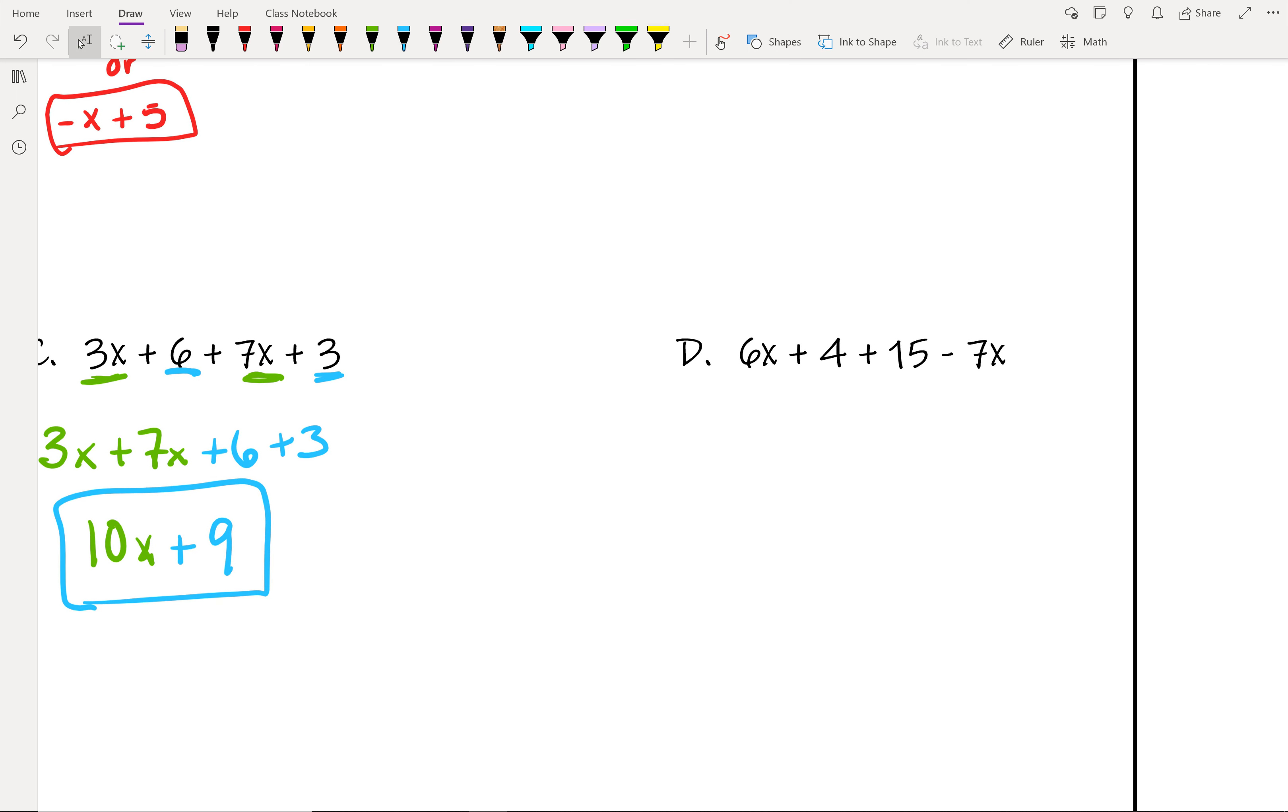Right, example D, once again, why don't you guys go ahead and give this whole thing a try. What do you get as your simplified version of this question? Alright, so the 6x and the minus 7x will go together, so we have 6x minus 7x. And then that 4 and 15 are already together, but we're going to move them over here. Alright, 6 minus 7 is negative 1, so we have the negative 1x. 4 plus 15 is 19.